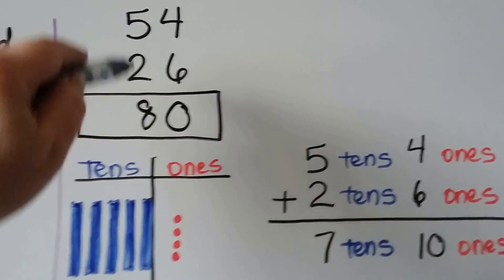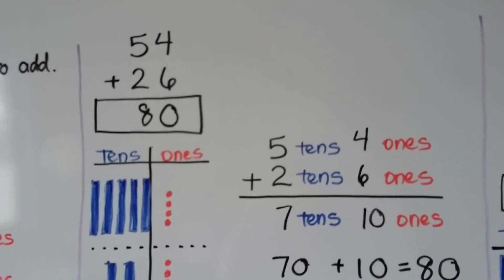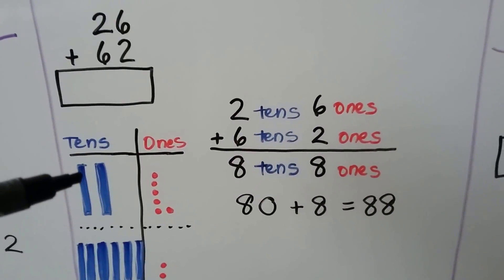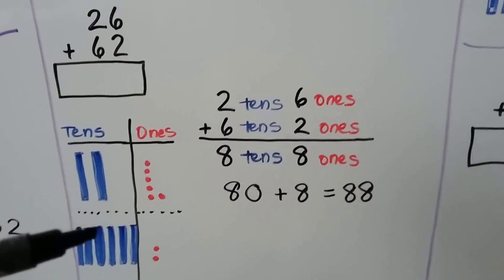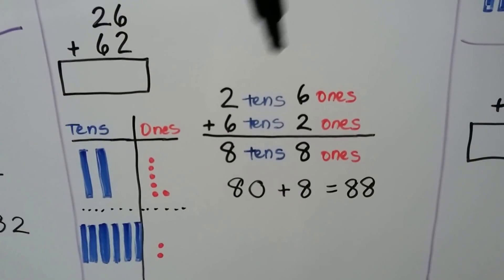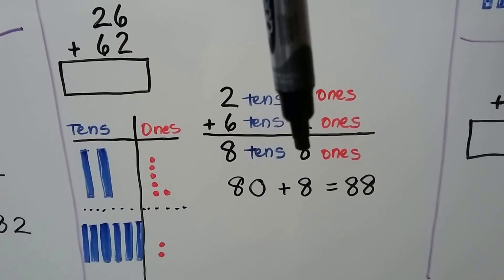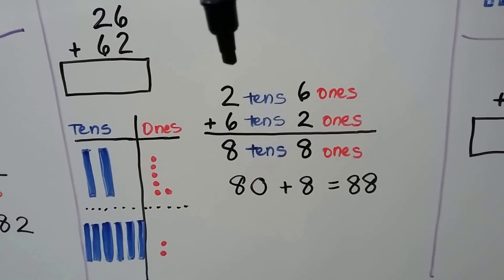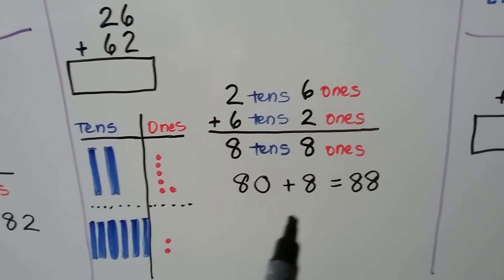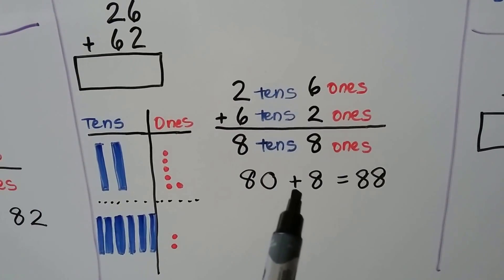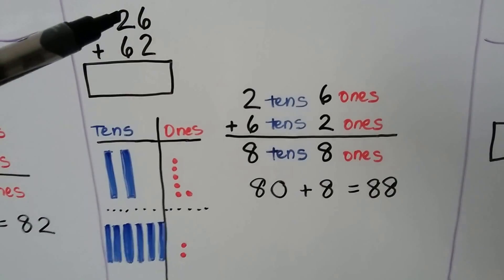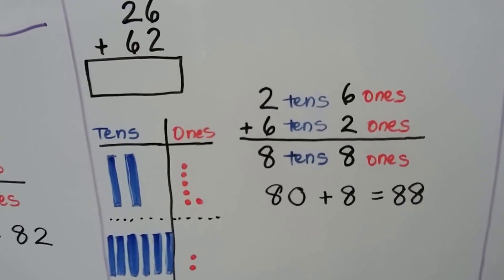That means 54 plus 26 is equal to 80. Put the zero in the ones column and the eight in the tens place. Let's try it one more time. We have 26 plus 62. We have two tens and six ones, and we're adding six tens and two ones. We stack the ones and tens on top of each other. Six plus two is equal to eight ones. Two plus six is equal to eight tens. That's 80. Eight plus 80 together makes 88. So 26 plus 62 is equal to 88.